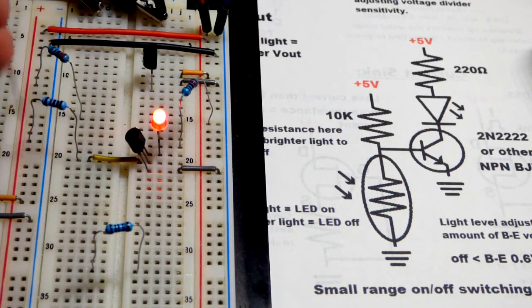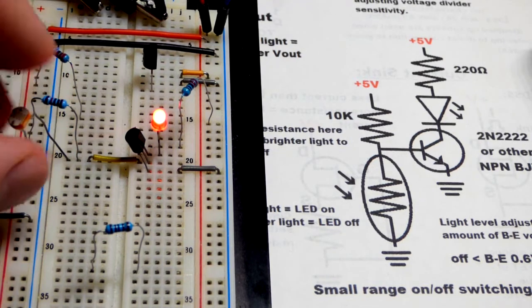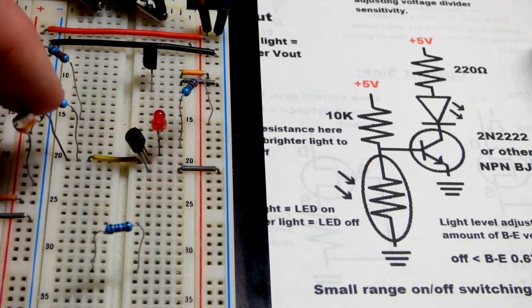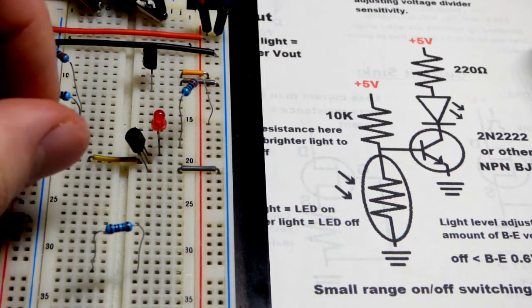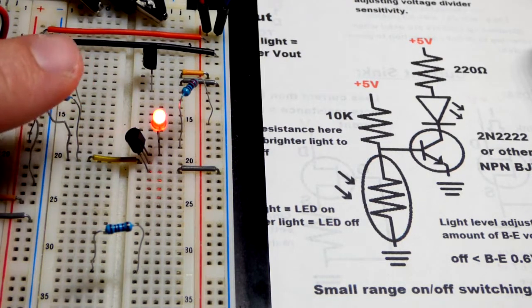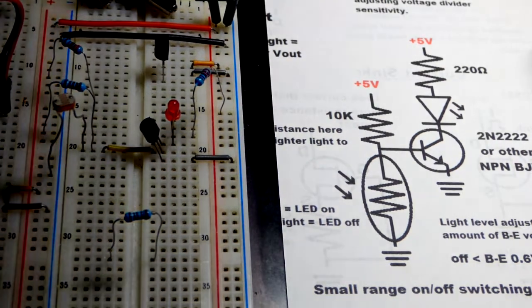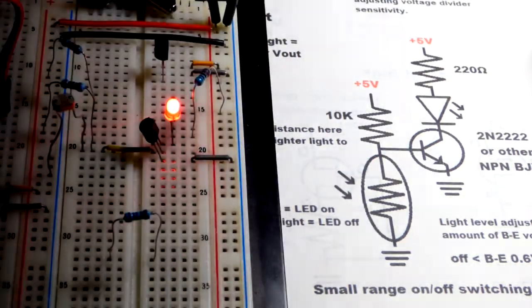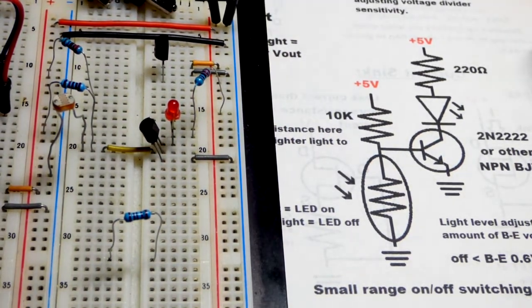And we're going to grab the light-dependent resistor and complete that side of the voltage divider. And so now you can see that when it's dark enough, the LED is on. But now, when it's bright enough, the LED is off, right there. So we did pretty good there. That's why I used that value resistor.